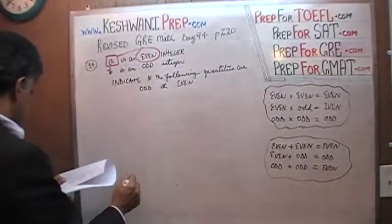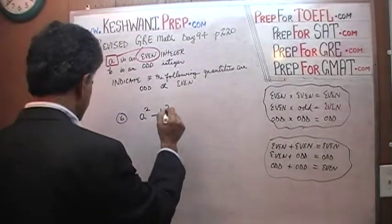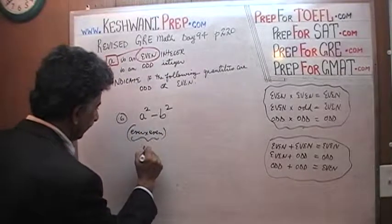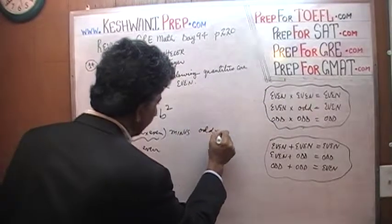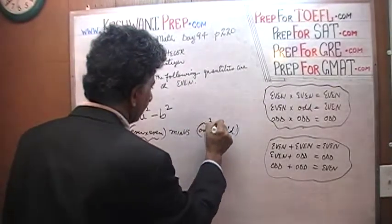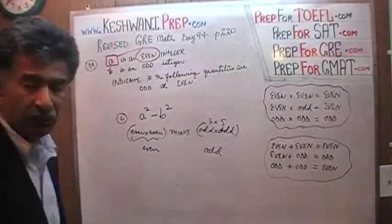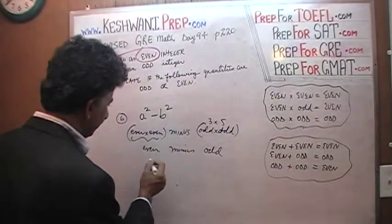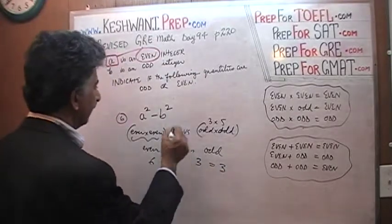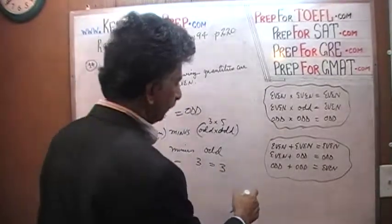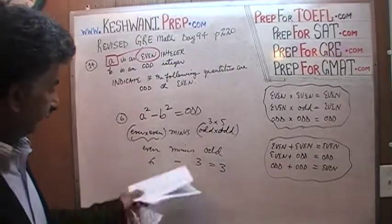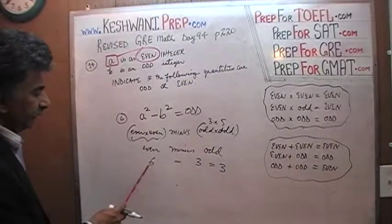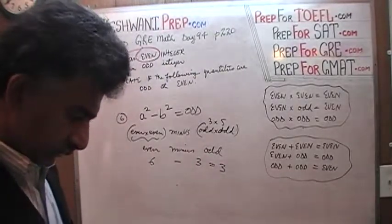Number six: a squared minus b squared. A squared is even times even, which is even. B squared is odd times odd — for example, 3 times 5 is 15, which is odd. So we have even minus odd. I prefer to just do it out rather than look at the rules: 6 minus 3 gives you 3, so even minus odd is odd. This whole quantity is odd.